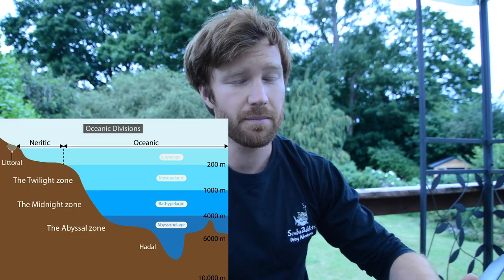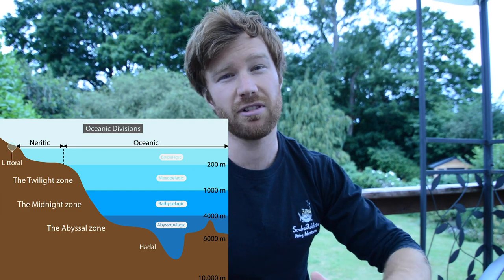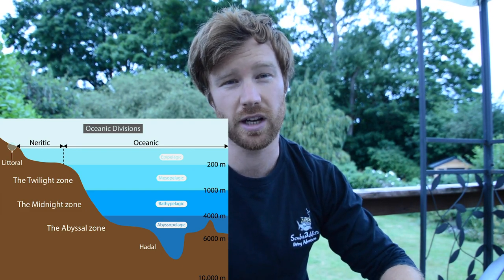Another common question I get is where do sharks live? Do they live in all the oceans? There are three main ocean zones that sharks live in. The first is the Neritic Zone — the area between the shoreline and the edge of the continental shelf, generally less than 200 meters of water. This is where we get a lot of our shark interactions due to the shallow water, where we can dive and where a lot of fishing happens. Neritic Zone sharks include blacktip reef sharks, bull sharks, hammerhead sharks, and epaulette sharks.